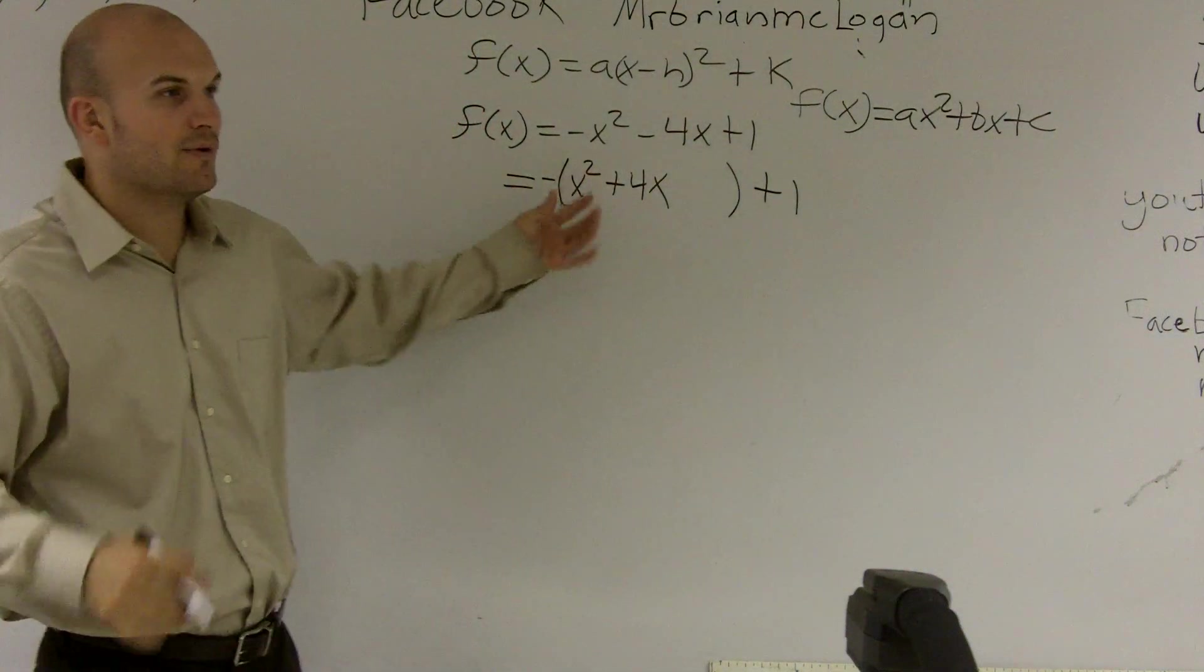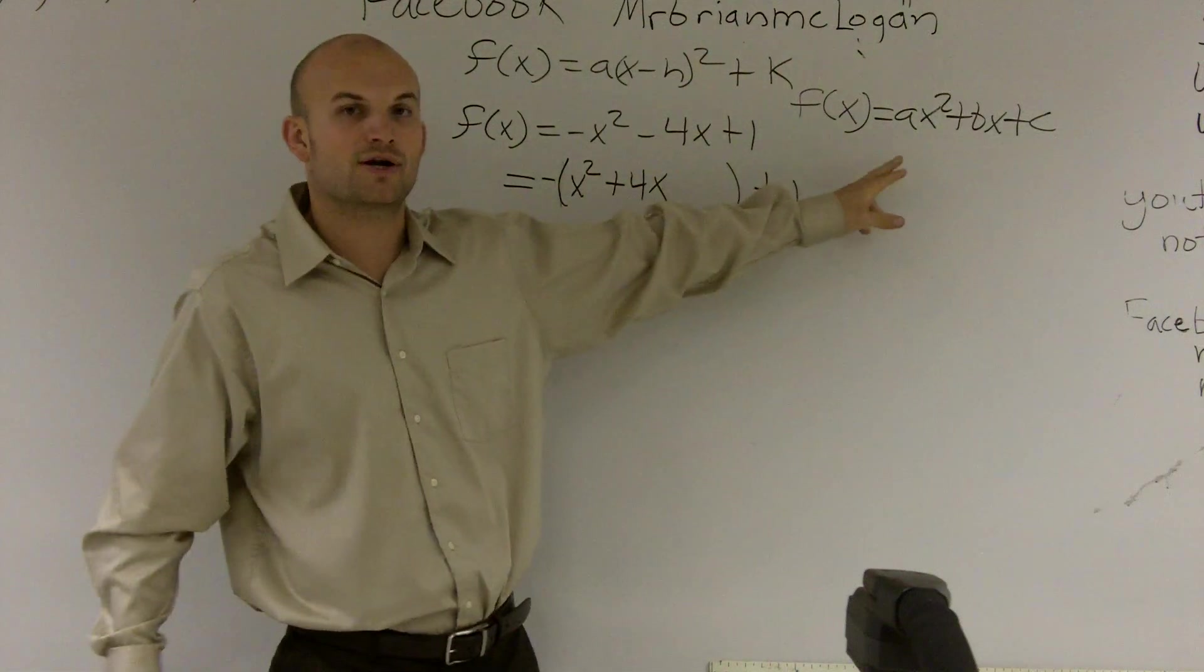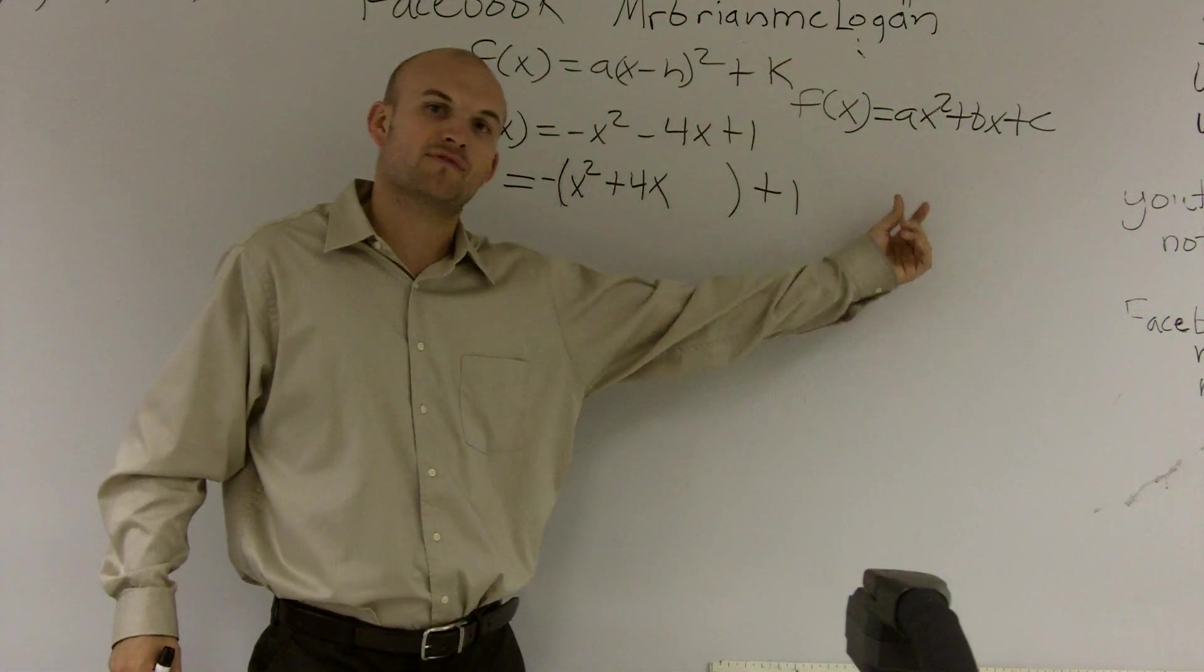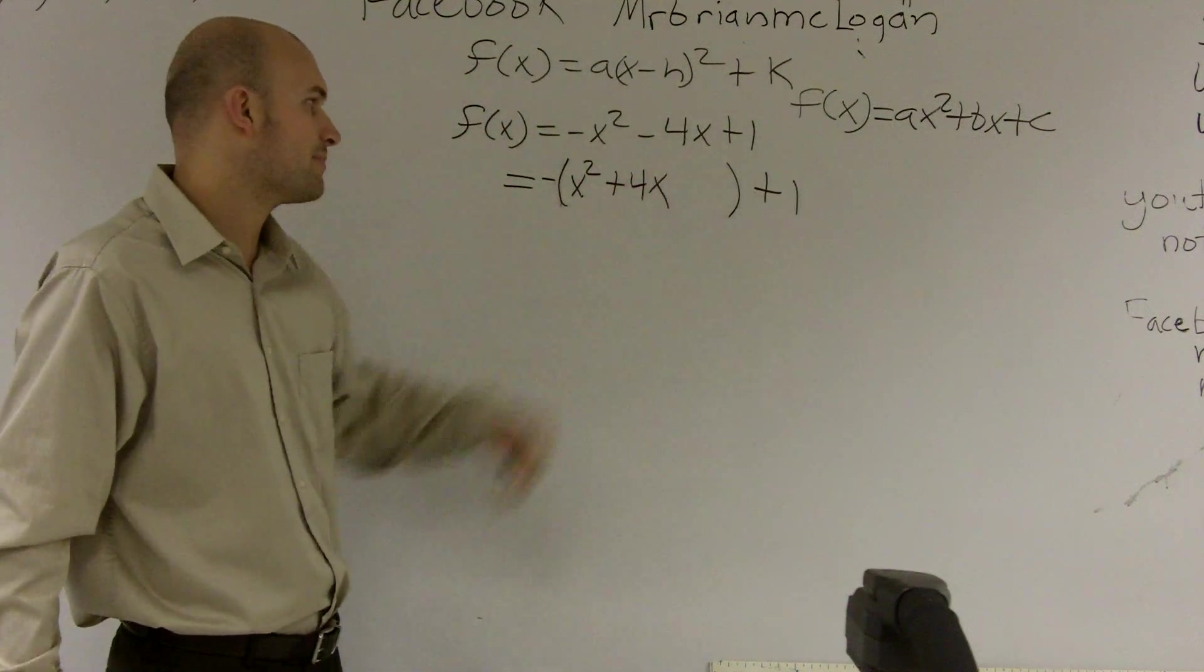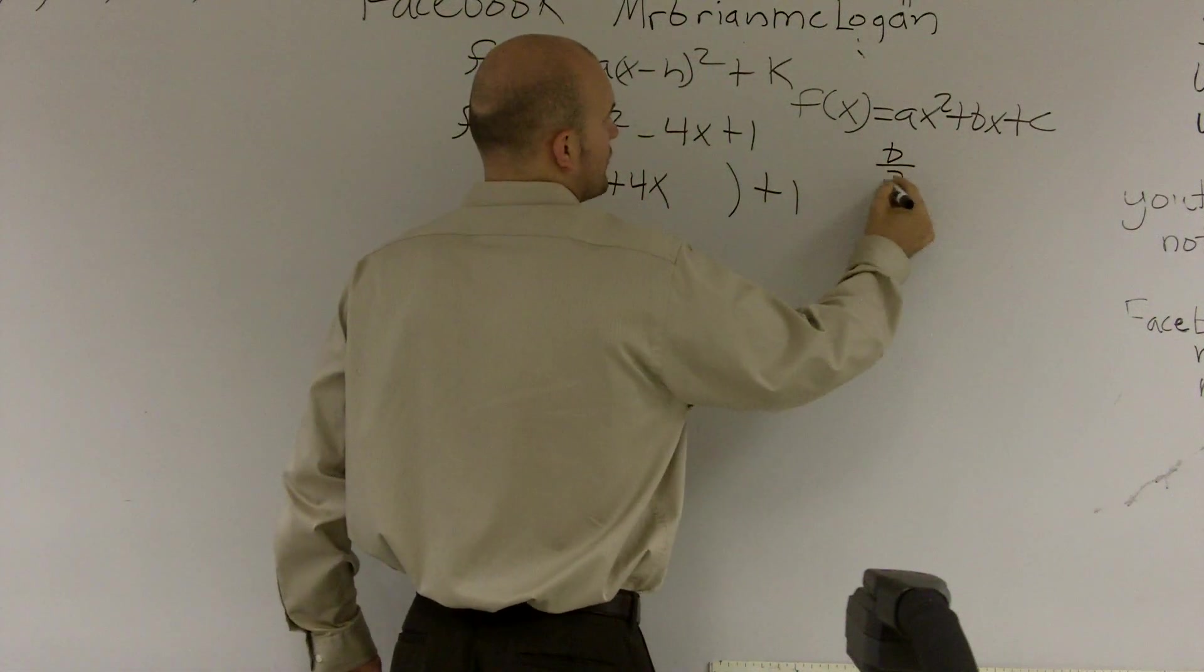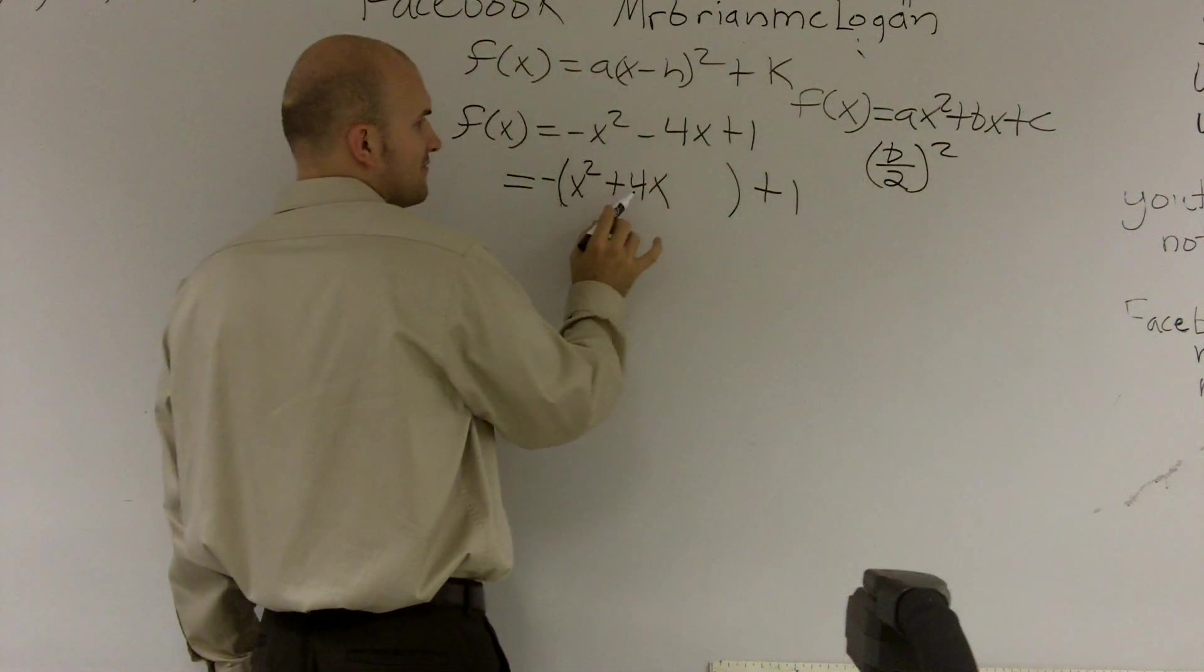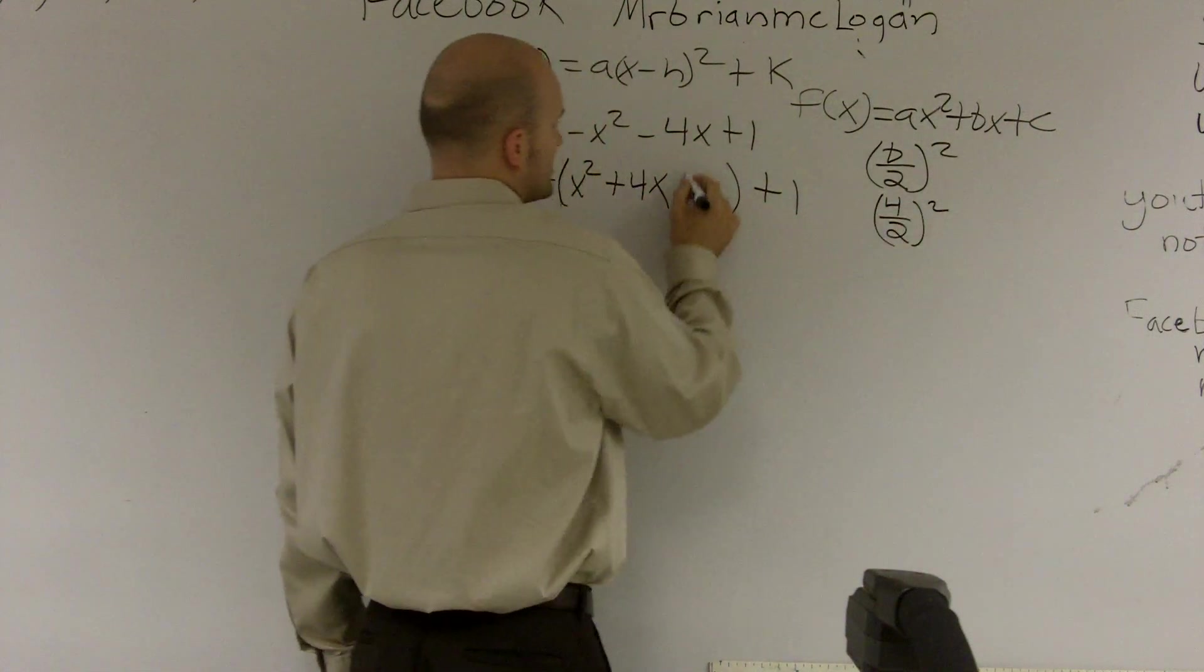And the reason why is because, remember, I want to try to get a trinomial that I can make into a perfect square. So I only want a trinomial inside of my parentheses. So to get the, what is my remaining term in my trinomial? Well, I'm going to do b over 2 squared. b was my 4. 4 divided by 2 squared ends up being 4.